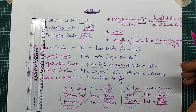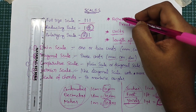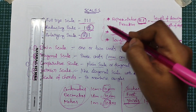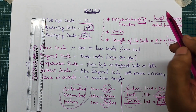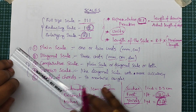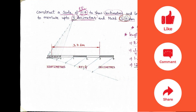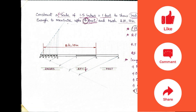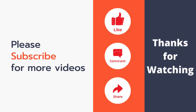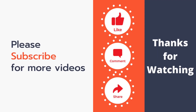When we solve scales, these three things are compulsory: RF, units to make subdivision marks, and the length of the scale. Example problems will be covered in the next video. If you like this video, please share and subscribe. Thanks for watching.